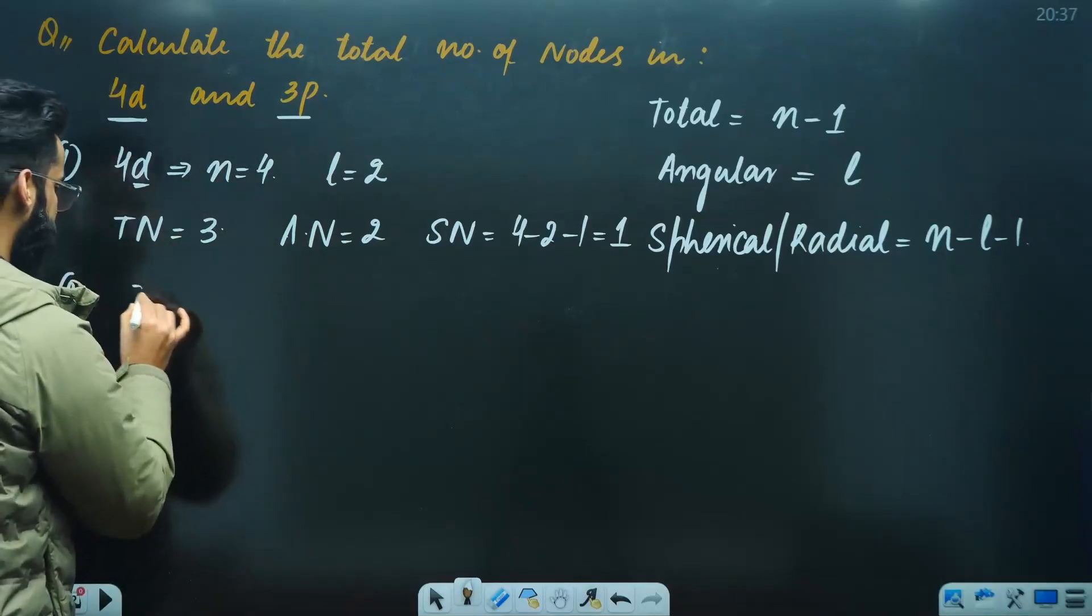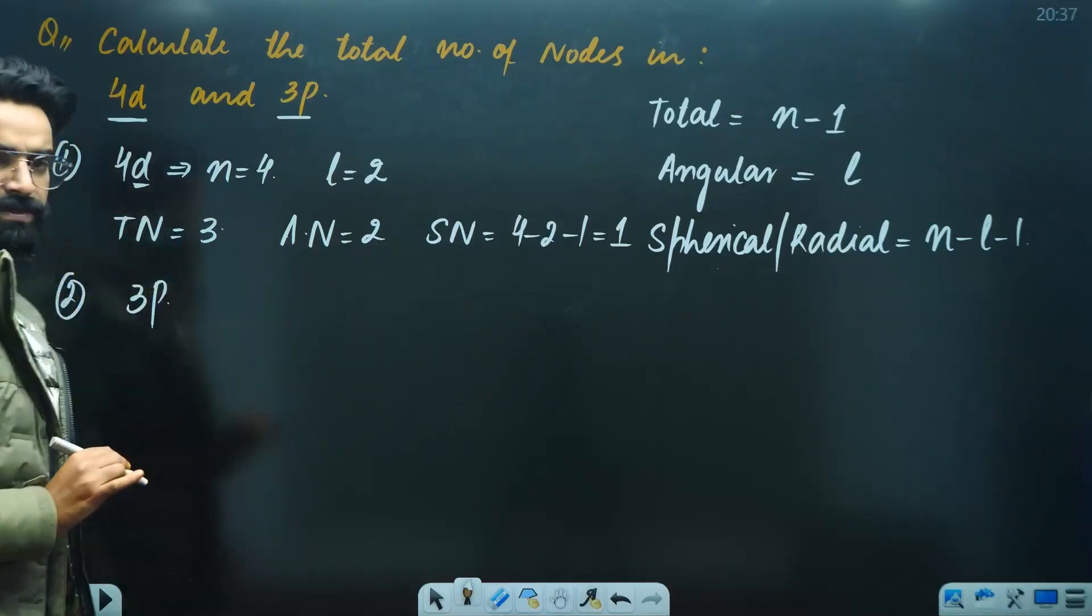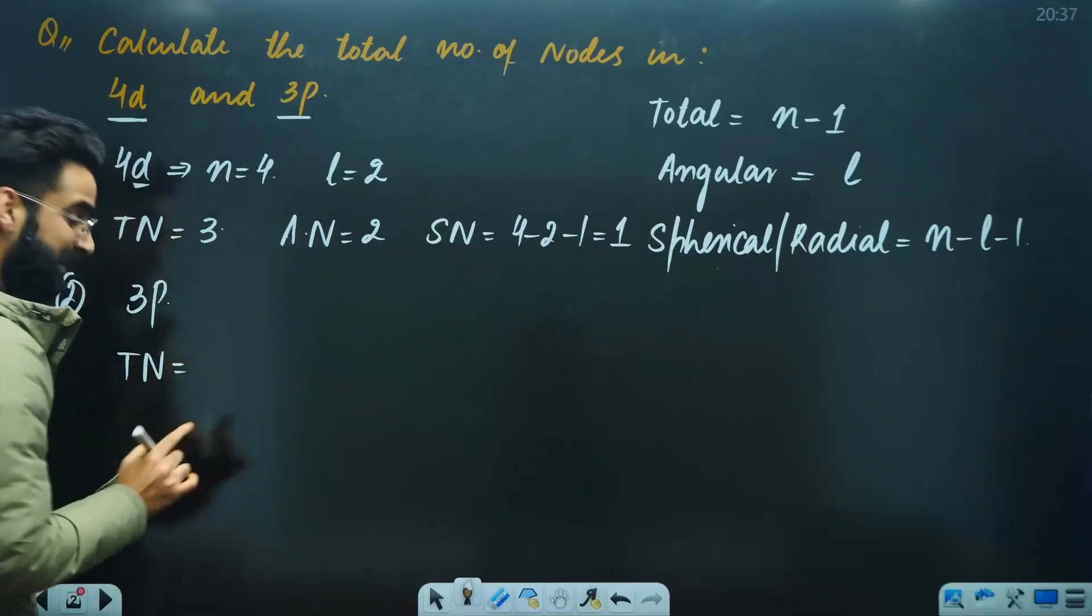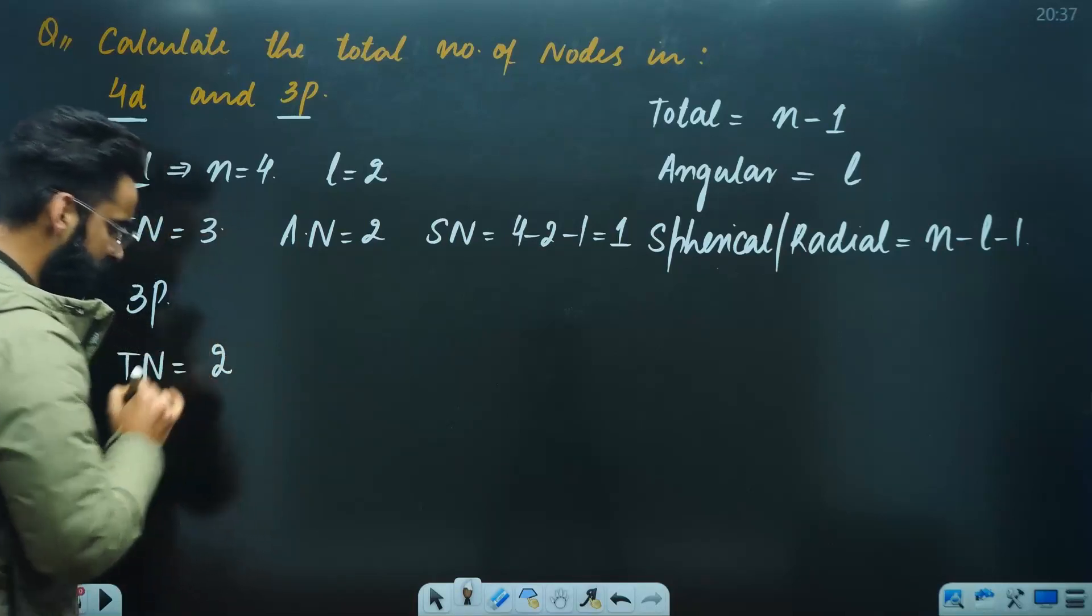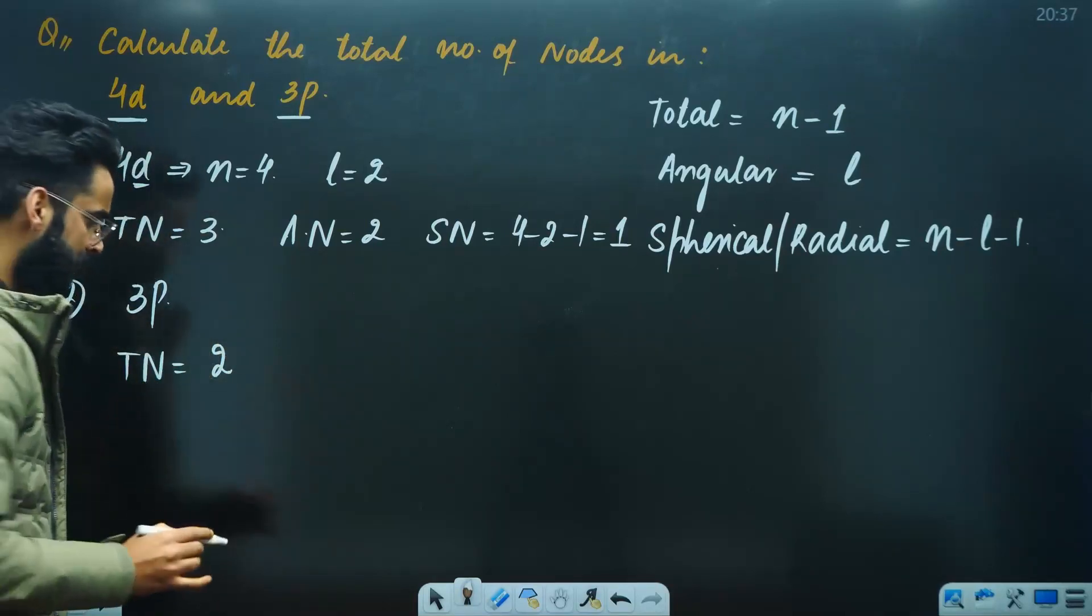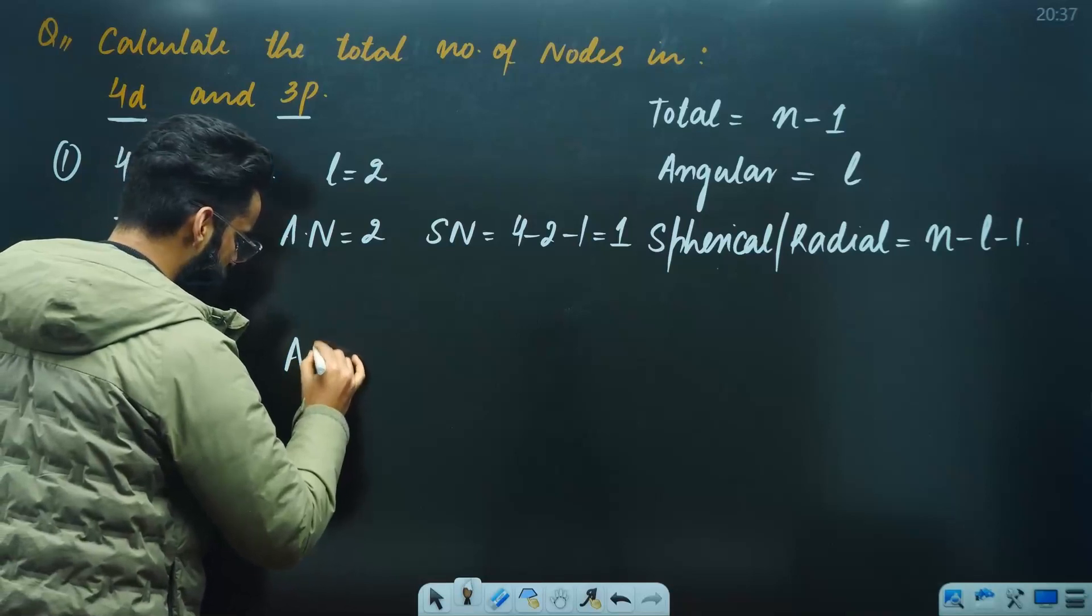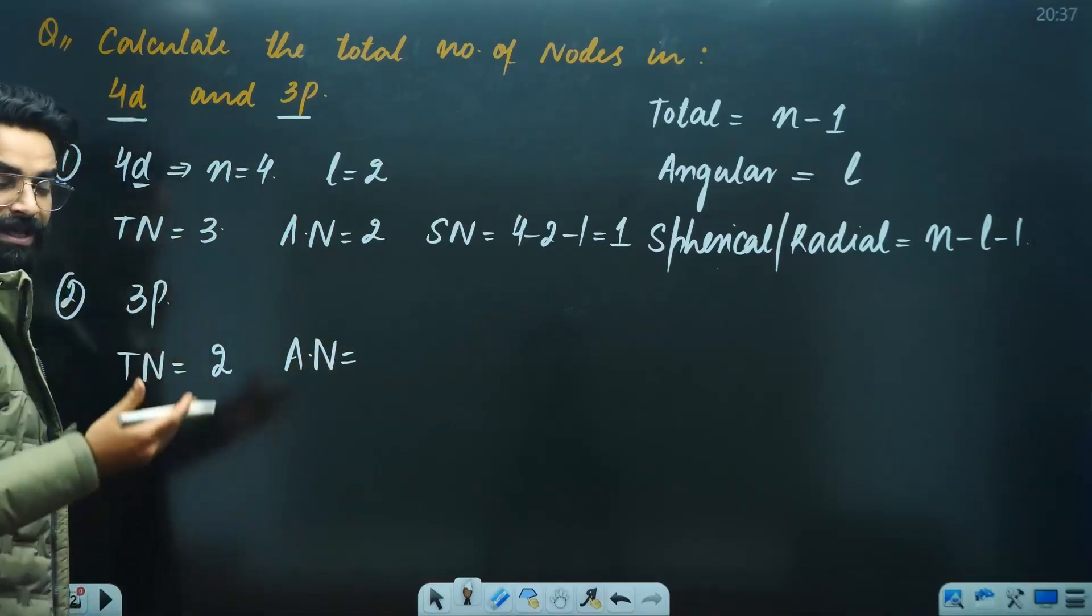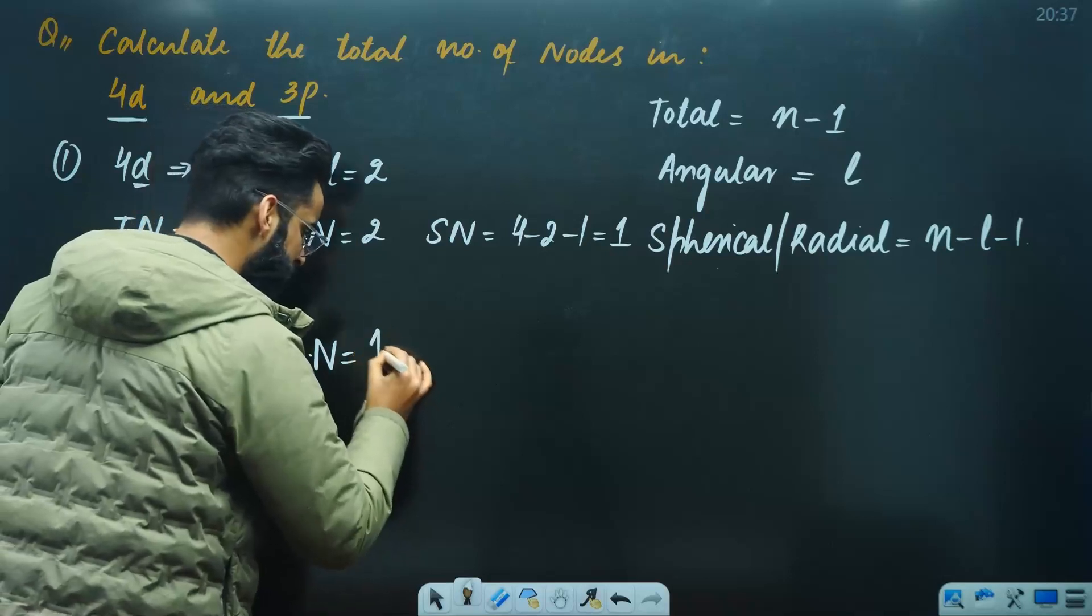It's similar. You've got another 3P. You can use the same procedure for 3P. If you calculate total nodes, the formula is n-1. N value is 3, so 3-1 is 2, so total nodes are 2. Similarly, if you ask angular nodes, angular nodes means L. This is P, so L is 1.